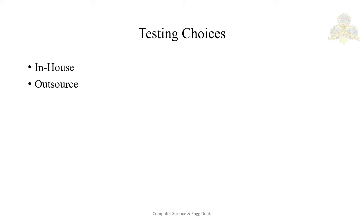Next we will see the testing choices — how can you do the testing. During the last 20 years the cost of hardware has been decreasing drastically while the cost of software is increasing rapidly, due to higher manpower and infrastructure costs. As a result, many organizations — particularly in developed countries — are outsourcing their complete software development activities, but they used to handle software testing and quality assurance themselves.